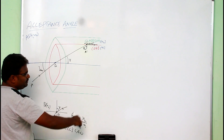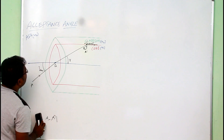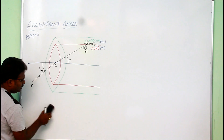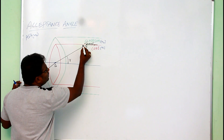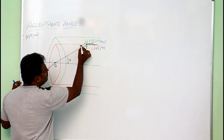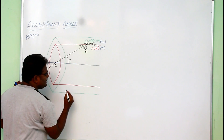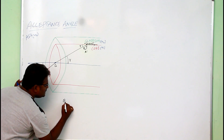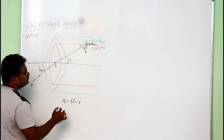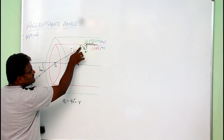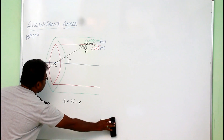This Snell's law is useful for the entire derivation while finding the expression for acceptance angle. Now at point C, the angle is R because these two are parallel lines — if this is R, this also will become R. So one can write at this point theta_C as 90 degrees minus R: theta_C = 90 − R.